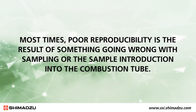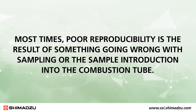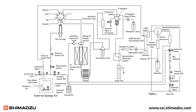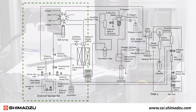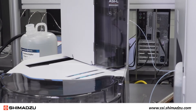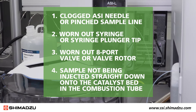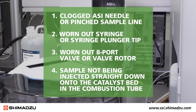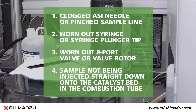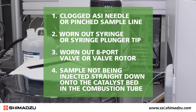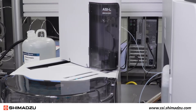Most times, poor reproducibility is the result of something going wrong with sampling or the sample introduction into the combustion tube. With regards to your TOC-L instrument, this would include anything before the combustion tube. The four most common problems are: clogged ASI needle or pinched sample line, worn-out syringe or syringe plunger tip, worn-out 8-port valve or valve rotor, and sample not being injected straight down onto the catalyst bed in the combustion tube. This video will address each of these scenarios in more detail.